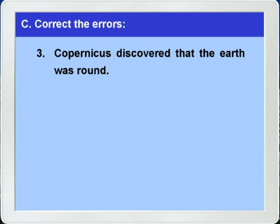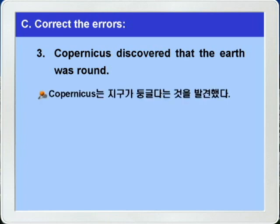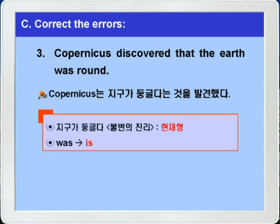3번, 코페르니쿠스는 지구가 둥글다는 것을 발견했다는 문장입니다. 지구가 둥글다는 것은 불변의 진리죠. 그러니까 반드시 현재형을 써야 됩니다. 정답은 was를 is로 바꾸면 되는 것입니다.